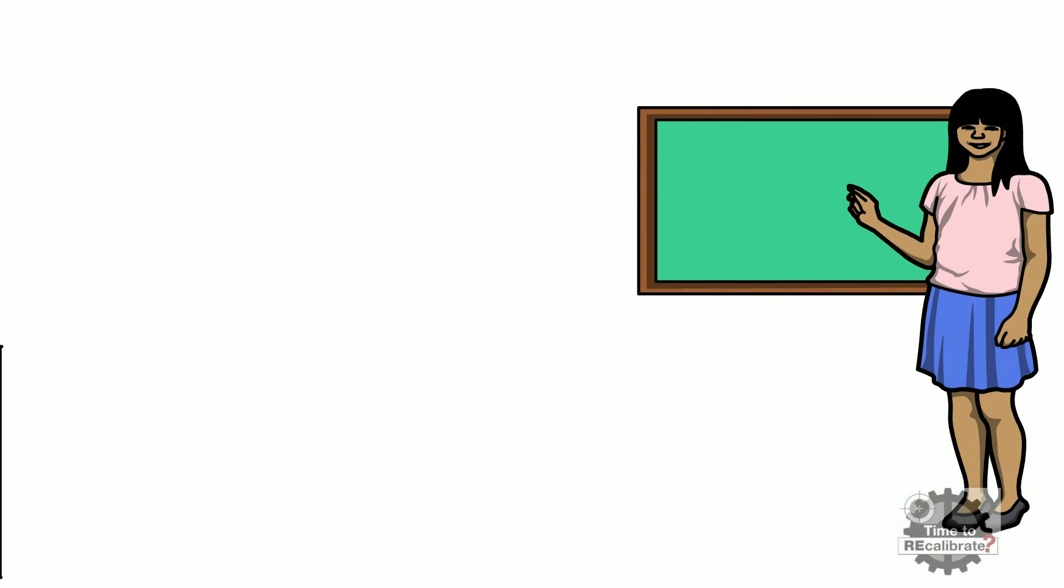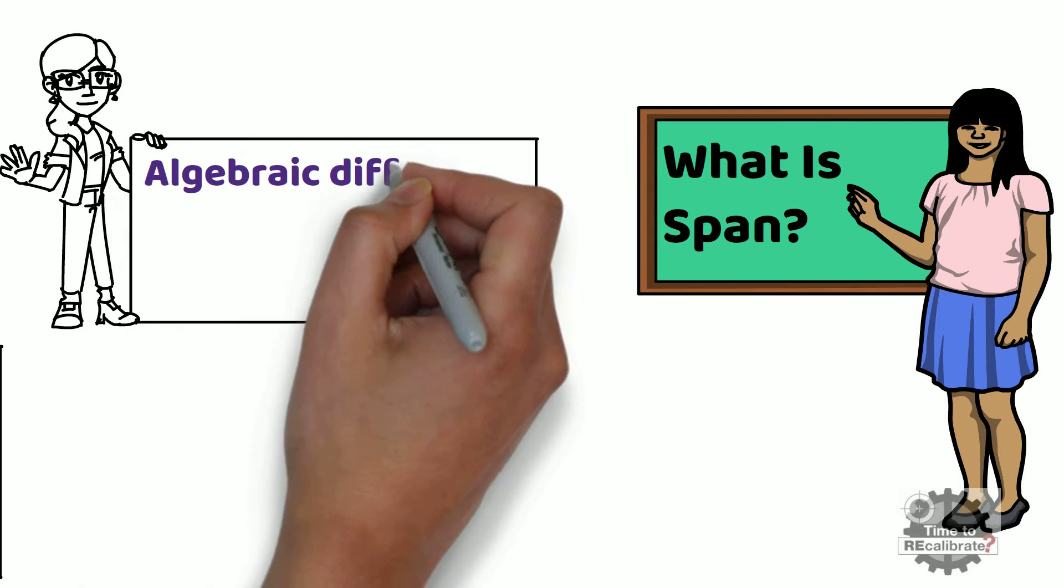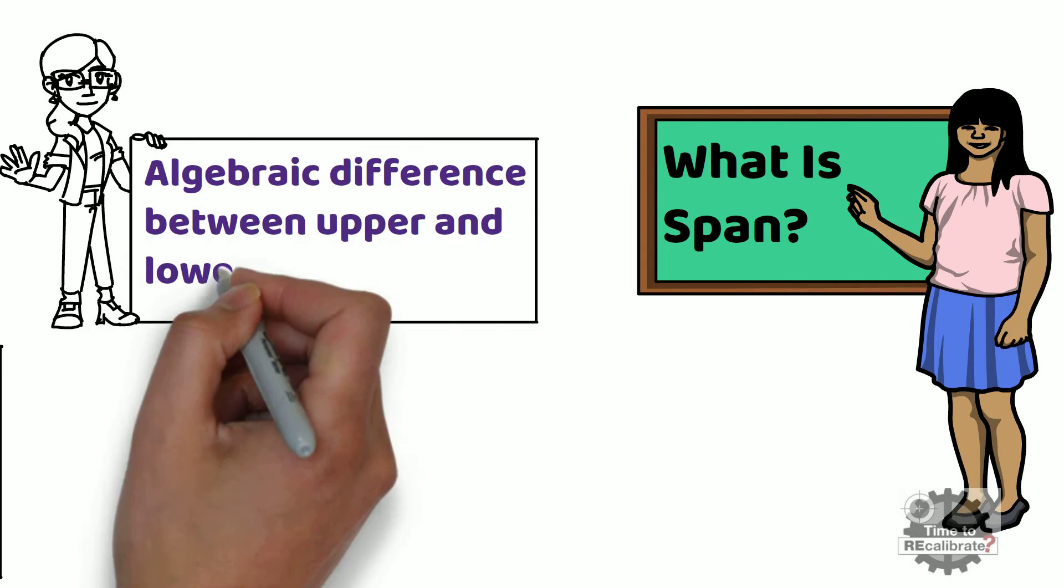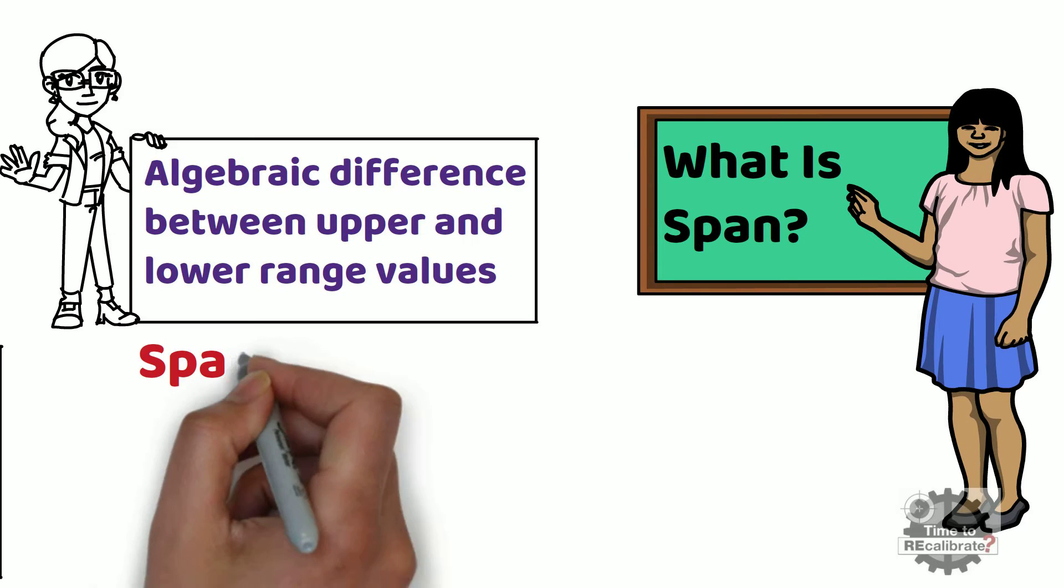First of all, let's learn what is span. In technical world, span is algebraic difference between upper and lower range values. In other words, URV minus LRV is known as span.